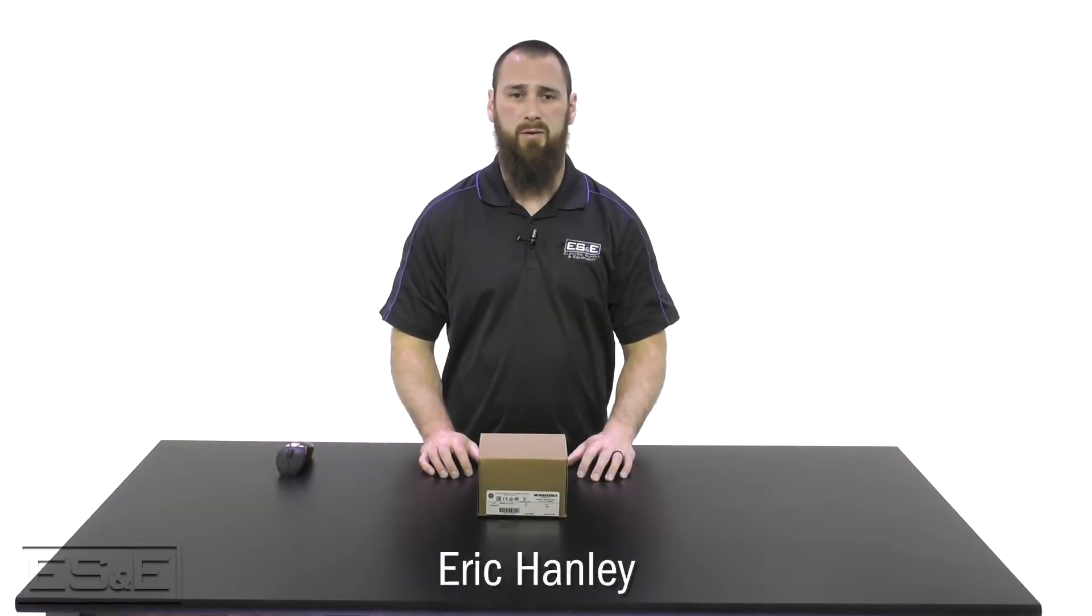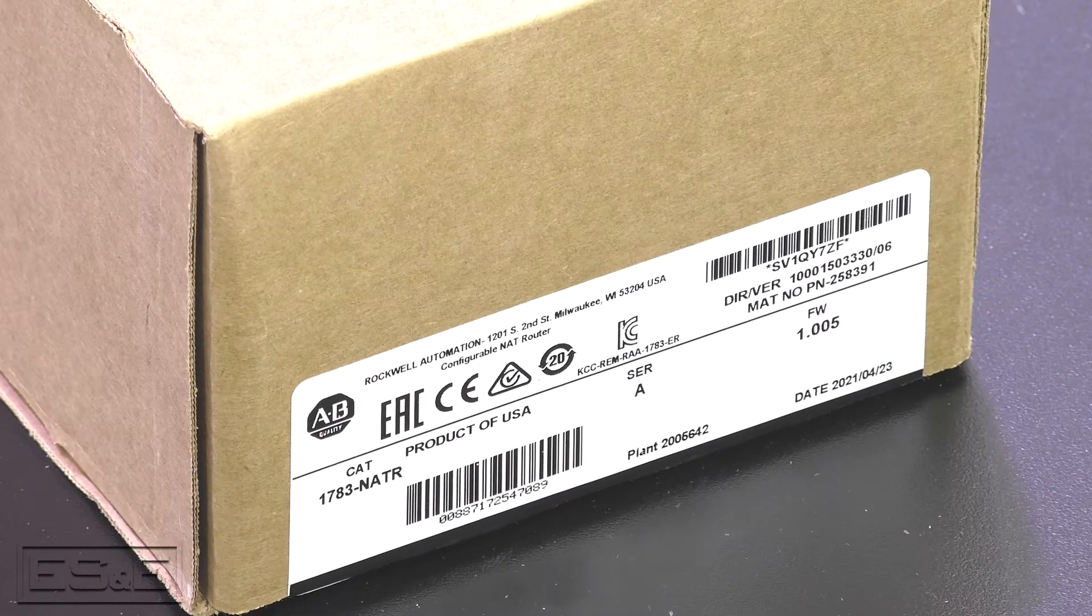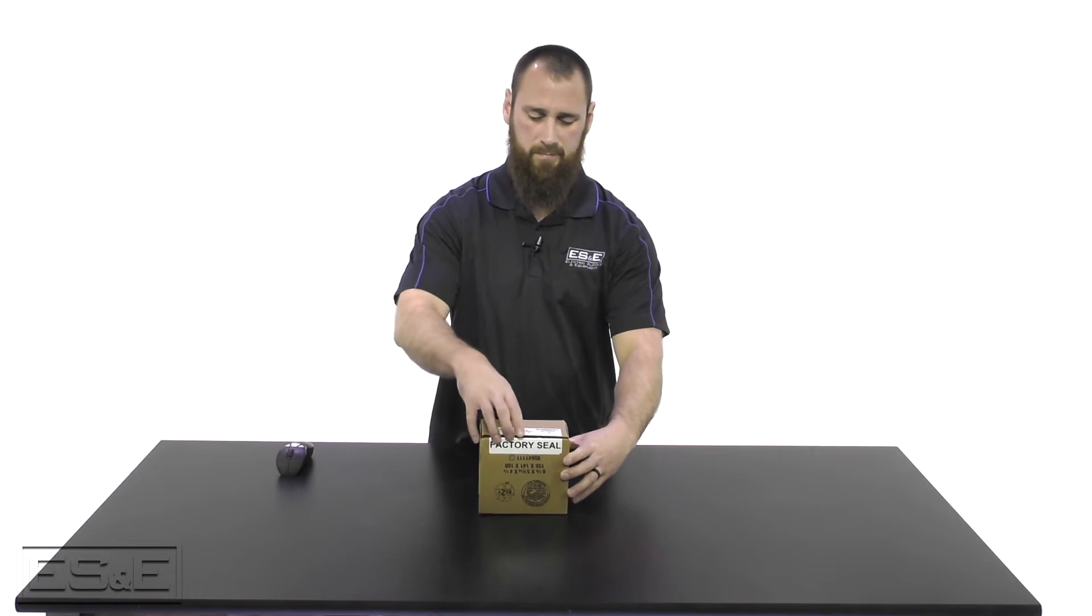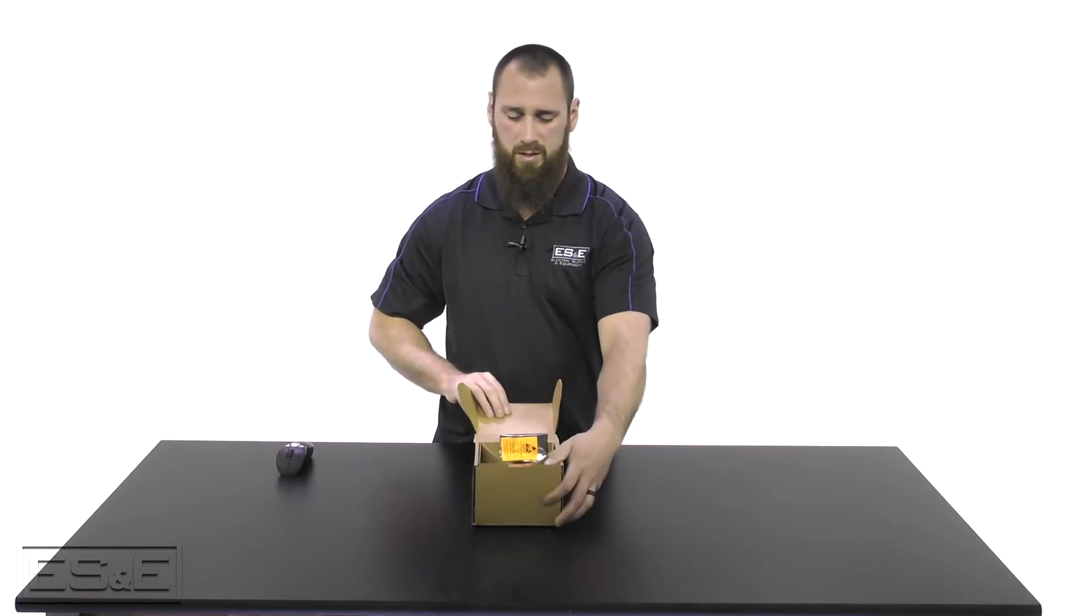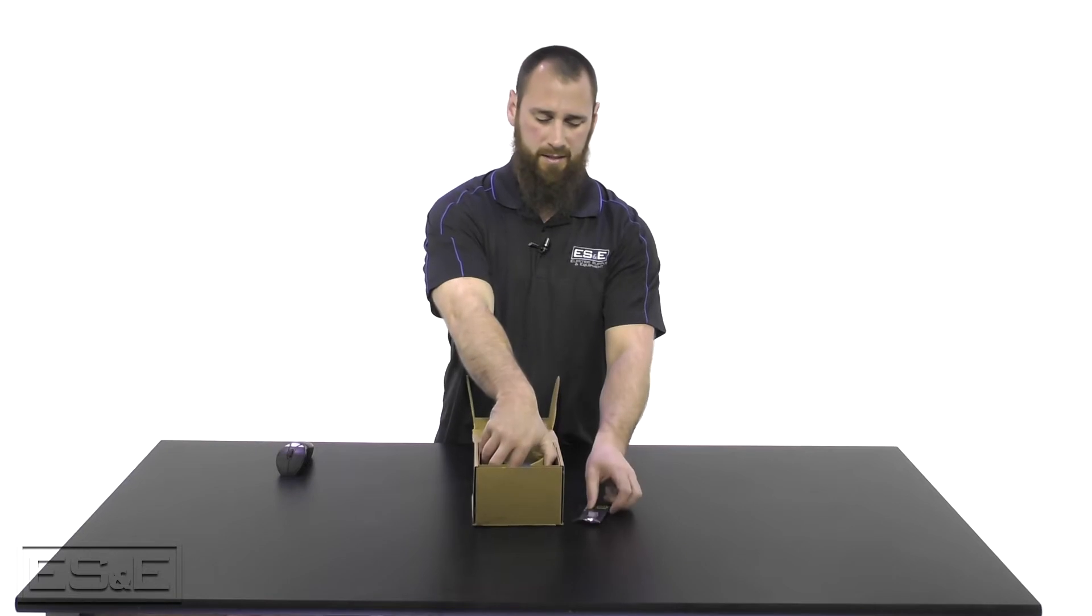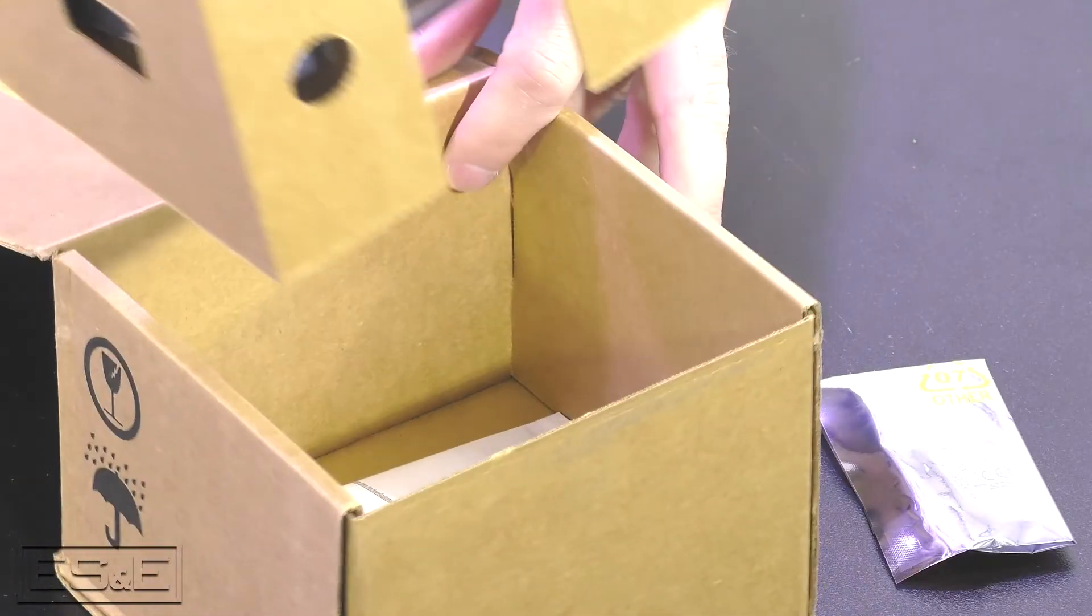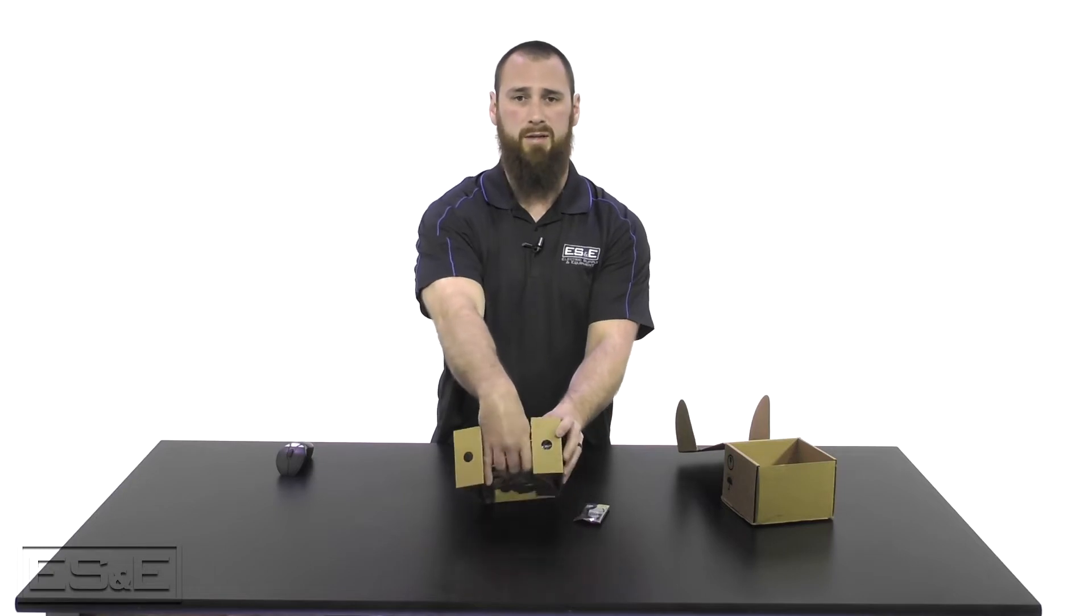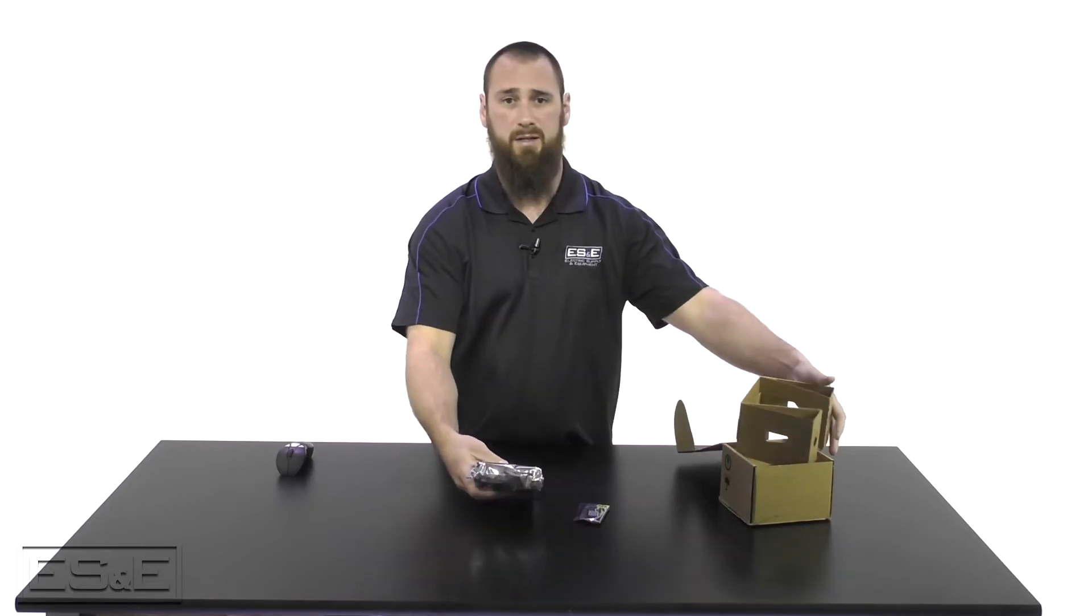In this video segment we are going to unbox our new 1783 NAT-R module. Inside our box we have the NAT-R and the SD card. Both are stored in their ESD bags which helps prevent electrostatic issues from manufacturing and shipping.